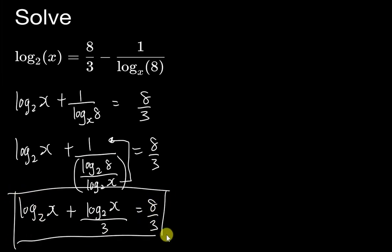The denominator will move to the numerator. This one becomes log₂(x) over log₂(8) which is 3, equals 8 over 3. Then this goes back to the equation just now. Multiply 3 for the whole equation, add together we have 4log₂(x) equals 8, then log₂(x) equals 2, then x equals 2² which is 4.